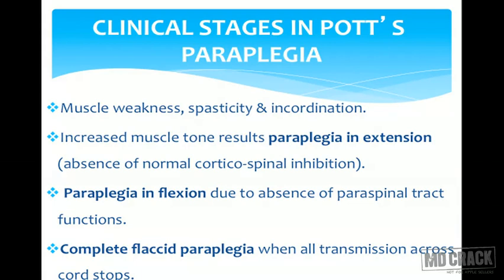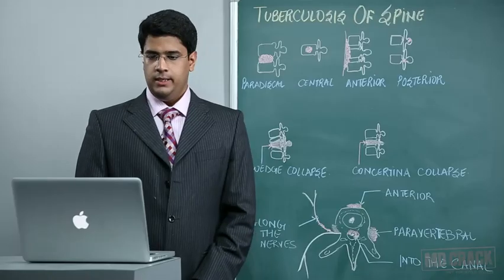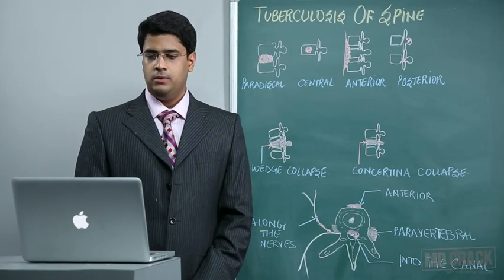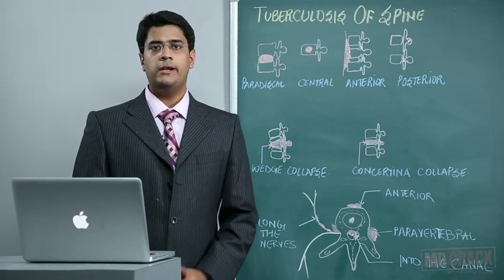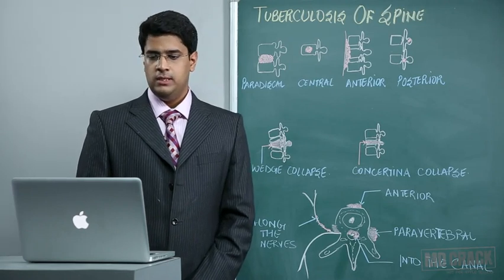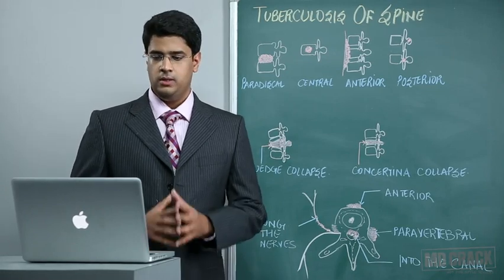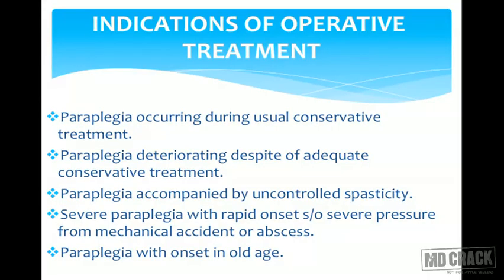Indications for operative treatment include: paraplegia occurring or worsening during conservative management, paraplegia deteriorating despite adequate conservative management, paraplegia accompanied by uncontrolled spasticity, severe paraplegia with rapid onset indicating severe mechanical pressure or cold abscess formation, and paraplegia with onset at older age.